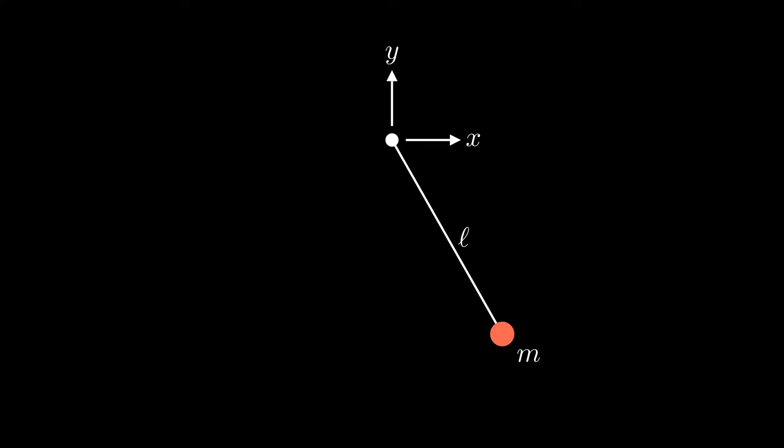Now, our mass has coordinates xm and ym. Solving for xm, we see that xm is l sine theta, and ym is going to be minus l cosine theta. The minus sign is because when theta equals zero, our pendulum is beneath the x-axis.